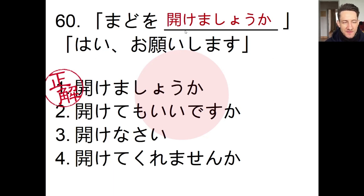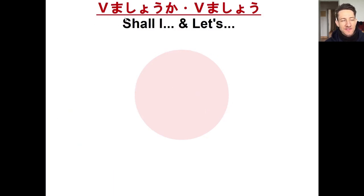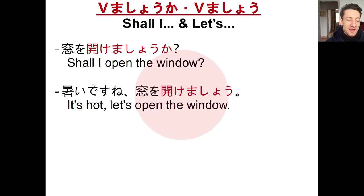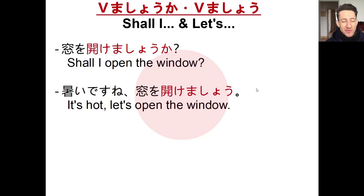For today's grammar lesson we're looking at how to express 'shall I do something?' We use mashoo ka — just add mashoo ka to the masu-stem of a verb. So mado wo akemashoo ka means shall I open the window? If we drop the ka, we get mashoo — let's. So atsui desu ne, mado wo akemashoo — it's hot, let's open the window. With ka you're asking the other person; without ka you're simply suggesting.